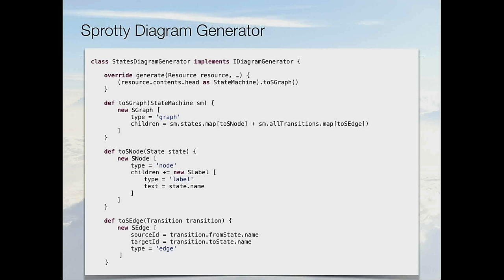Here's an example of how this diagram generator could look like. This is a trimmed-down version of the generator used for the example we showed. The entry point is the generate method. It goes over the contents of the Xtext resource and transforms that to a Sprotty graph. Inside that, for every state we generate a node, and for every transition we generate an edge. Here is the node creation method and the edge creation method. This language, if you don't recognize it, is Xtend, which is a Java dialect — compiled to Java. We like to use it in the context of Xtext, especially for model transformation and code generation cases like this.